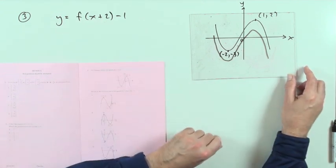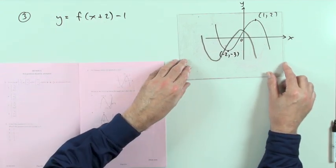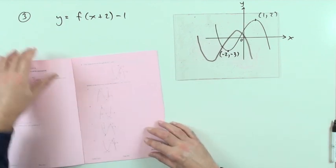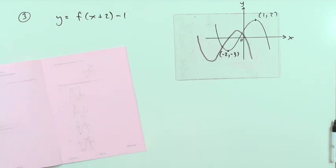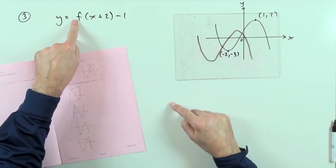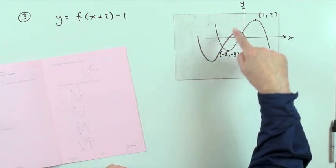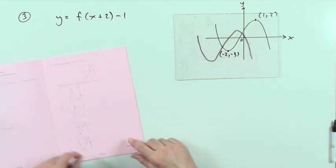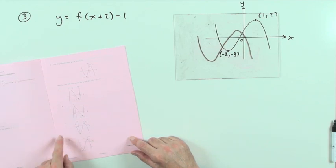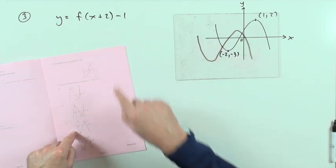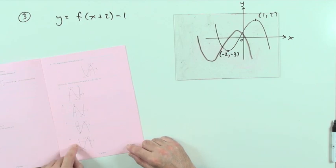So it's going to end up looking something like this. And that alone is sufficient to pick out the answer, because since there's no negative multiplying number, it's going to be the same way around: minimum then maximum. That only happens with c and d, and it's going backwards rather than forwards, so it has to be d.